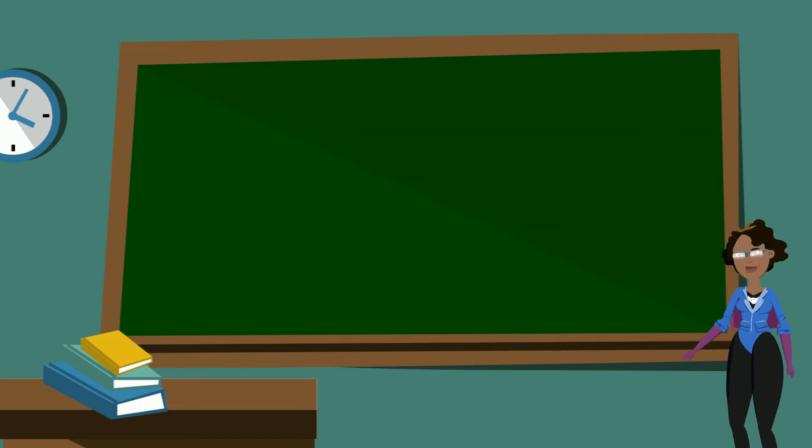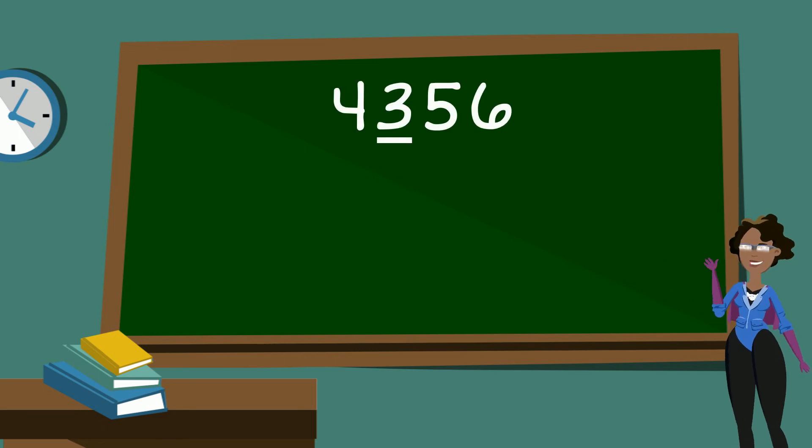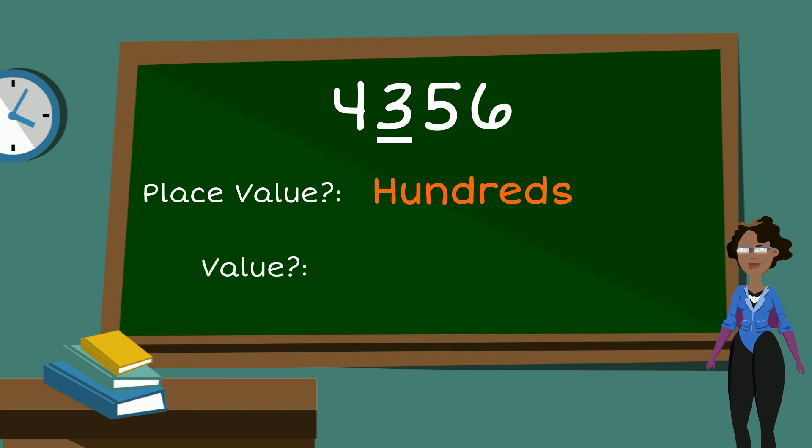Let's combine all we've learned to figure out the questions below. What is the place value of the number 3 in the figure shown? The place value is hundreds. Now what is the value of the digit 3? The value is 300.